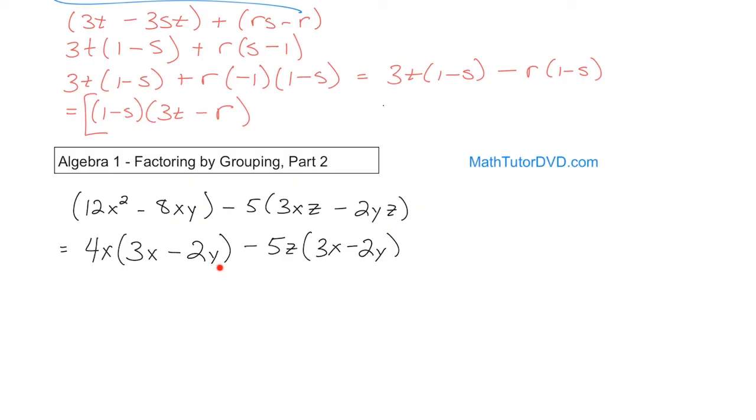Now, look what happens. I have (3x - 2y) and (3x - 2y). This is the common term that I'm now then going to factor out by grouping, making it (3x - 2y). And then what do I have left? When I factor it out of this term, I'm left with 4x. And when I factor it out of this term, I'm left with 5z. Notice I have a minus sign, so it's minus 5z. And there you go. That's the final answer. (3x - 2y)(4x - 5z).